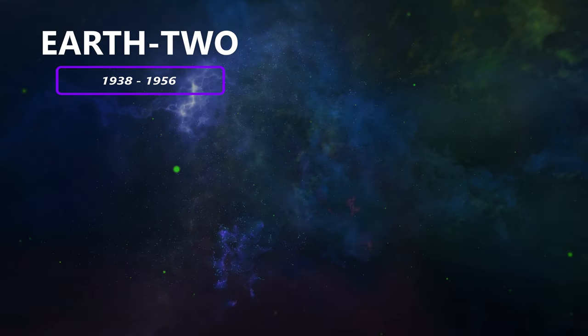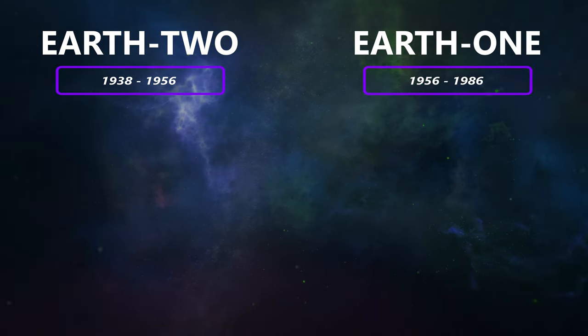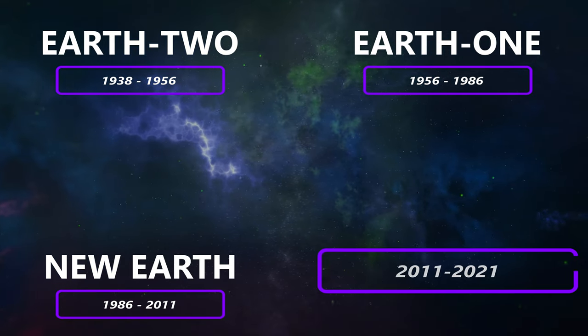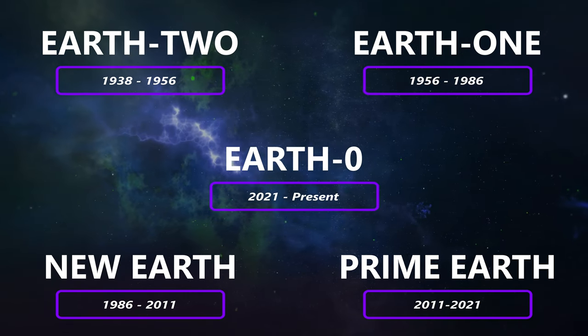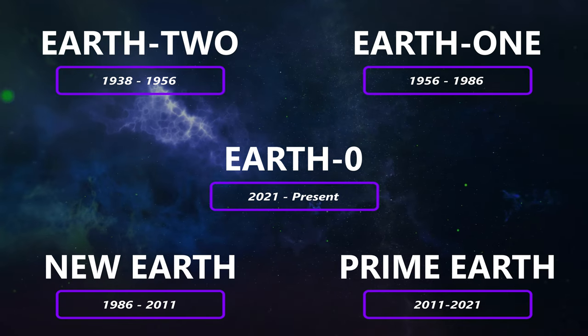Summarizing it for anyone I may have lost somewhere in the middle: 1938 to 1956 is Earth 2, 1956 to 1986 is Earth 1, 1986 to 2011 is New Earth, 2011 to 2021 is Prime Earth, and 2021 onwards is still Prime Earth but everyone also remembers the old universes. I hope that clears things up for everybody. It's still a mess, I'll acknowledge that, but it's a fun mess, for sure.